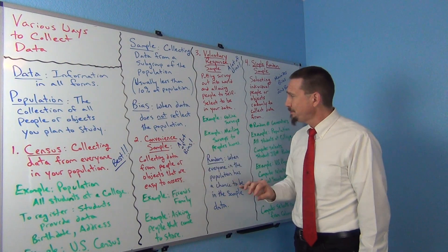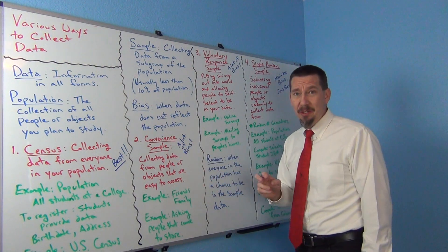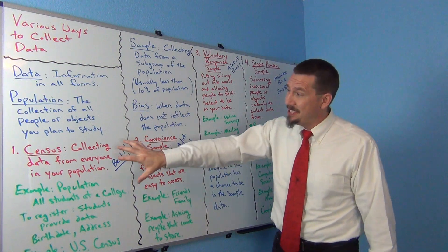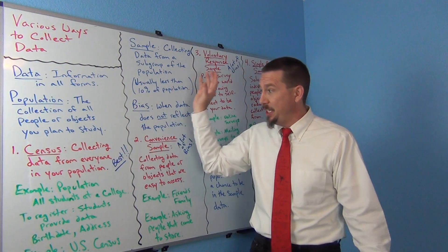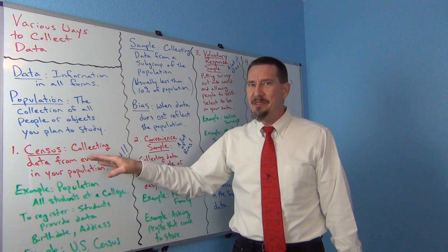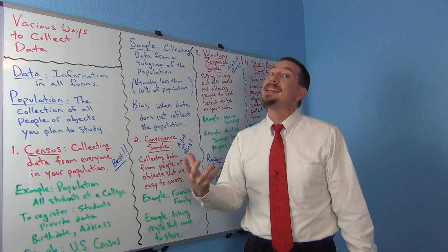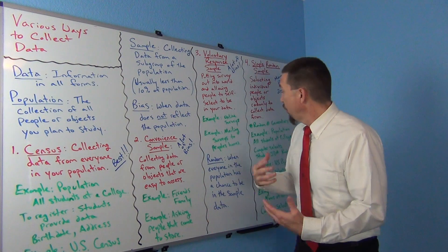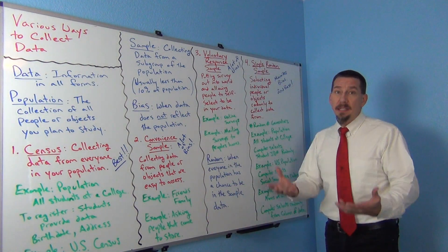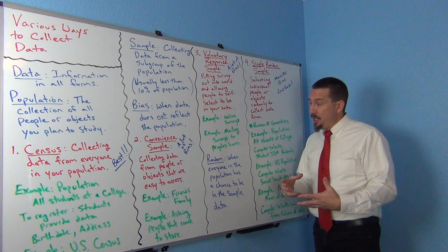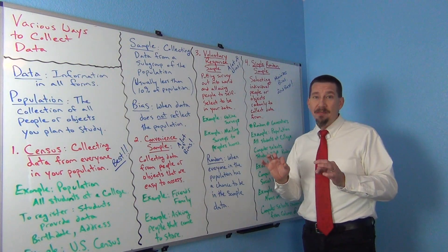So if voluntary response samples and convenience samples are kind of bad, what sample is good? Obviously a census — collecting data from everybody — would be best, but you often can't do that. So if you have to do a sample, the go-to is a random sample. And now we're getting into the word random again...